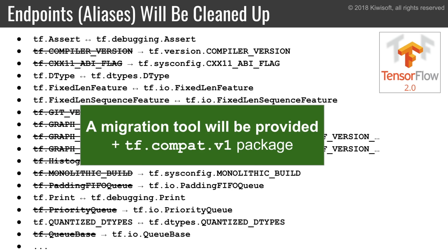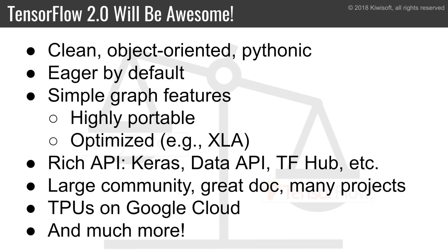Plus, there will be a tf.compat.v1 package for backwards compatibility, so this will facilitate the transition. In summary, TensorFlow 2.0 will be awesome — clean, object-oriented, Pythonic, eager by default, with easy-to-use graph features making it highly portable and optimized. It will still have a rich API, including Keras, the data API, tf.hub, and much more, plus a large community, great documentation, many projects built on top of it, TPUs available on Google Cloud, and much more.